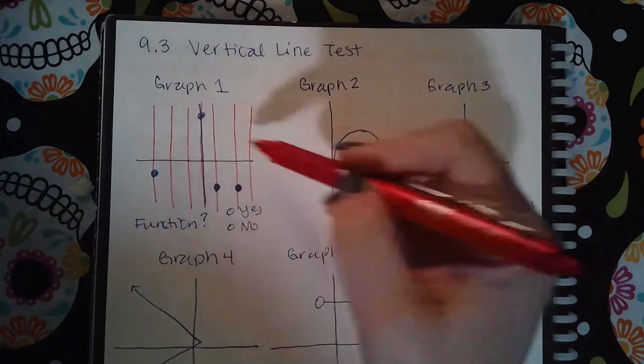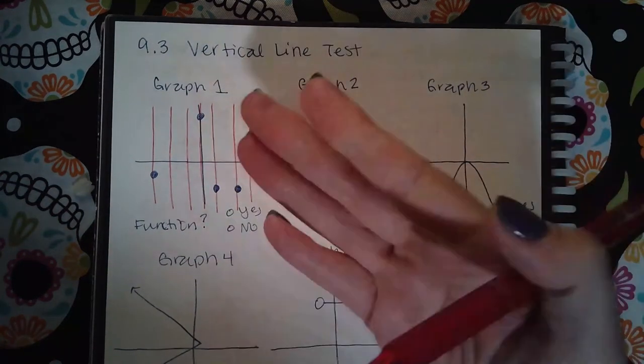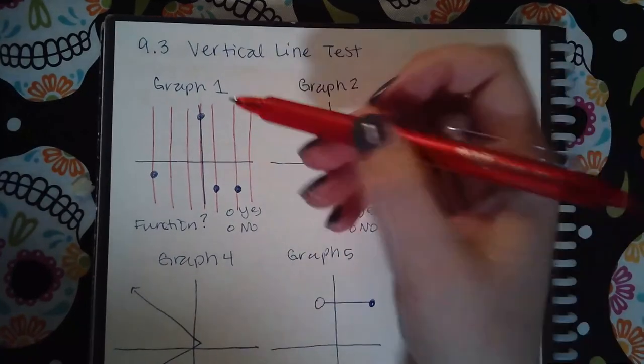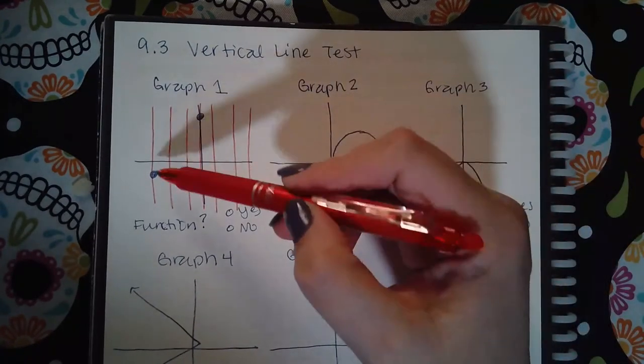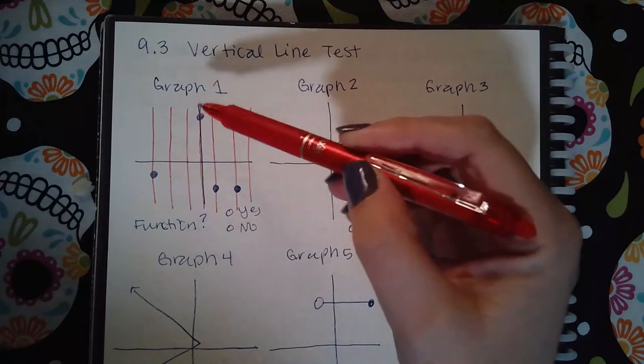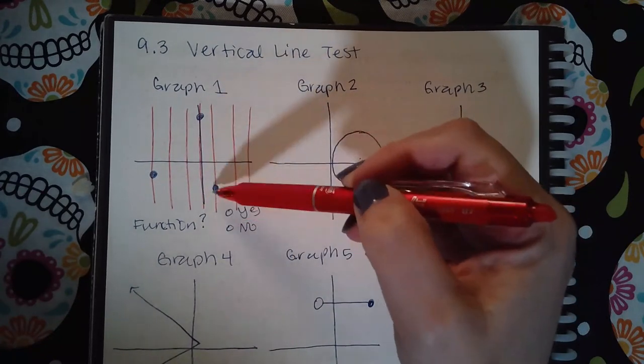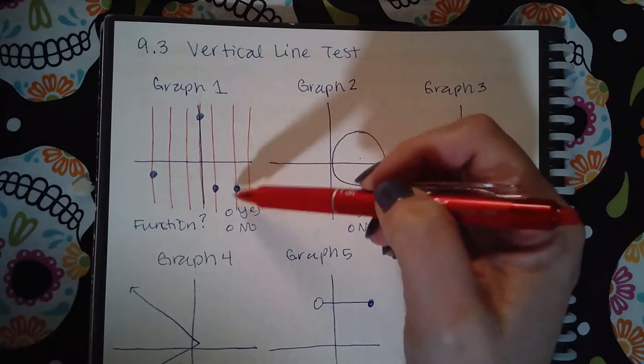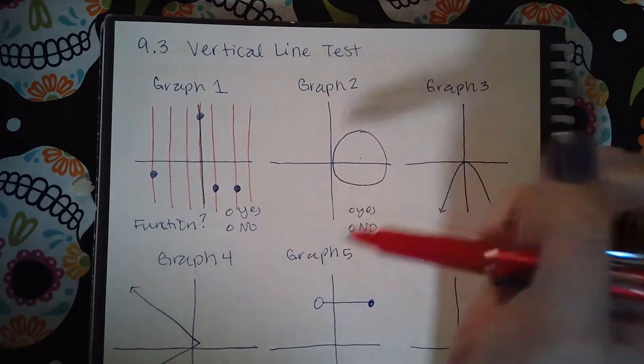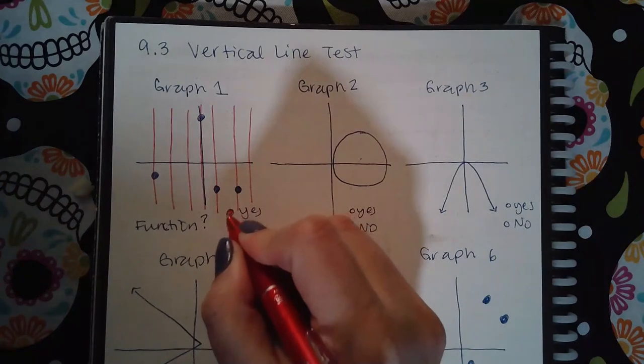So notice that I drew a bunch of vertical lines on here. This is visually what I'm seeing when I apply the vertical line test. I notice that this vertical line only touches the graph once, this vertical line only touches the graph once, this one only once, and this one only once. So this one is a function.